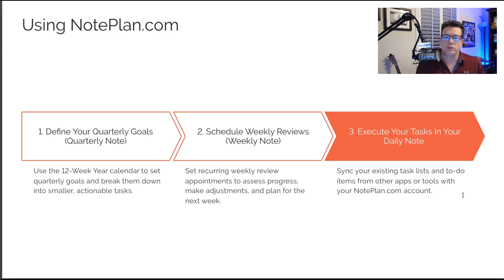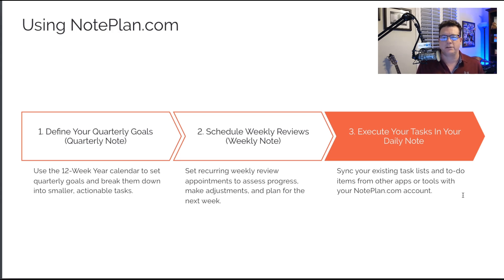Then what you do is use the weekly note in NotePlan to figure out what you're going to do this week to execute your 12-week goals. And in a similar fashion, you use the daily notes in NotePlan to break it down into the few tasks you need to do today so that you can meet your goals for the week and your goals for the quarter. It's a nice structured flow-down system that ensures every day you're working on the few things needed to meet goals that are a mere 12 weeks away.